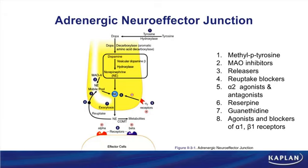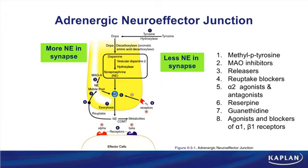To effectively describe how drugs affecting this diagram work, you have to know what's going on normally. Looking at the legend, I'll divide drugs into two categories: those that increase the amount of norepinephrine in the synapse, and those that cause less. Let's start with drugs causing more norepinephrine. The first drug, labeled number two, is MAOIs.